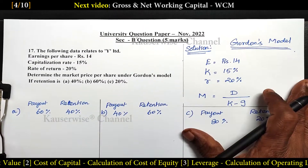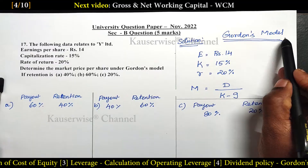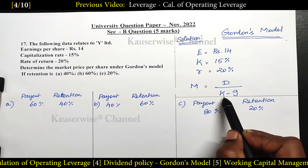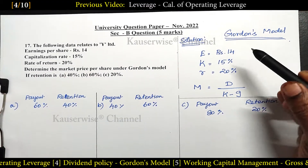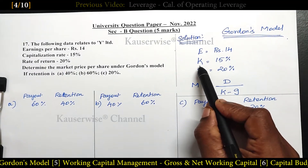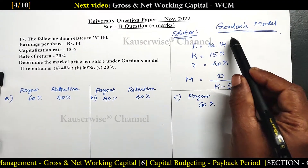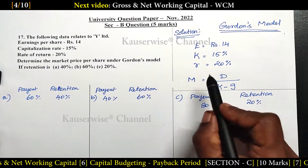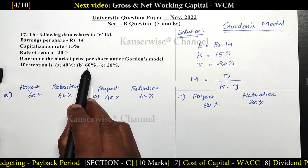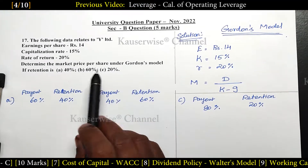Now let's see the solution. They are asking us to calculate market price per share under Gordon's model. The formula for market price is: M = D / (K − G). Here they have given earnings per share E = ₹14, K = 15%, and R = 20%. They are asking us to find market price per share if retention is 40%, 60%, and 20%. So we have three different cases, and accordingly we need to calculate market price.